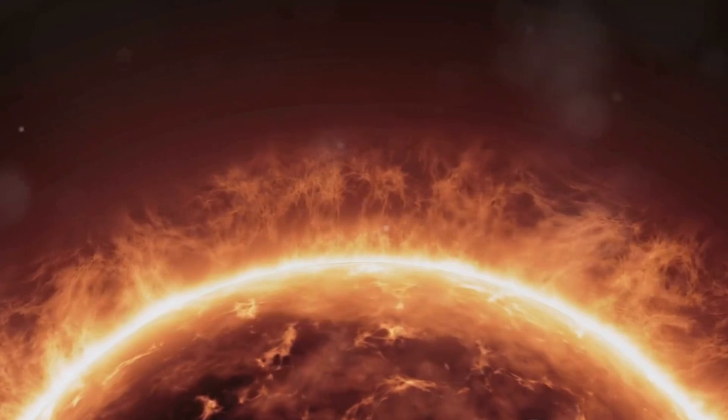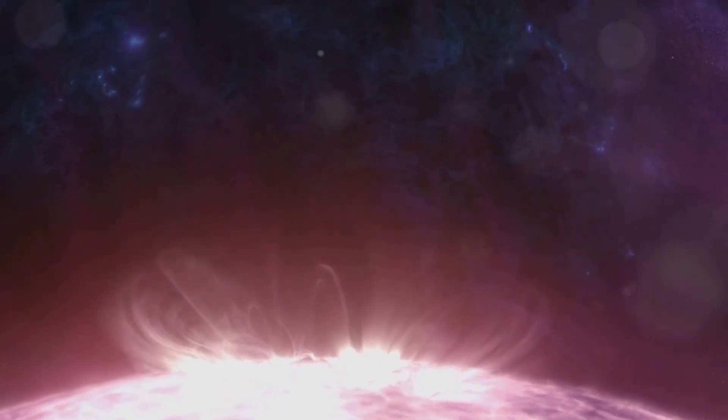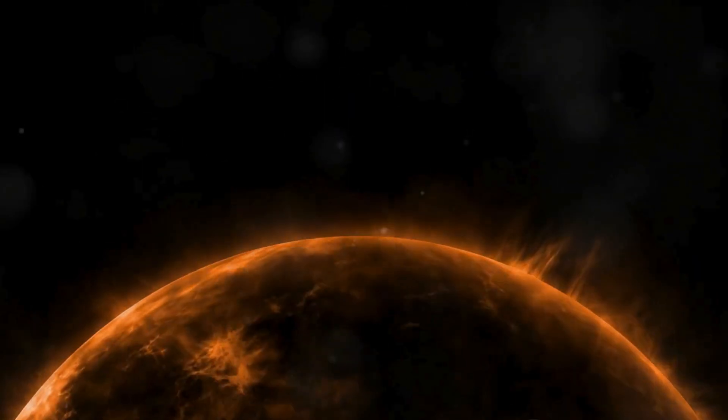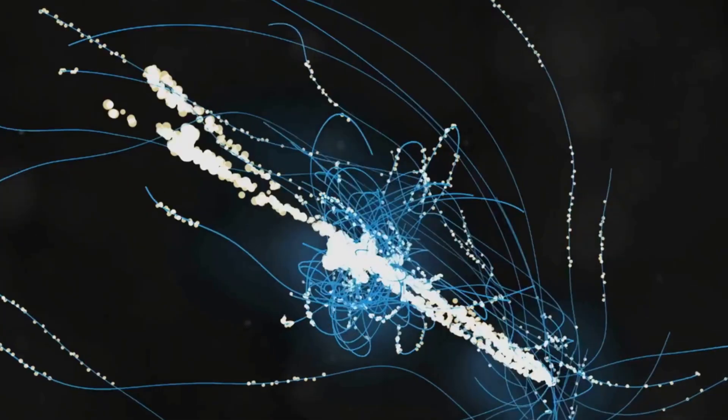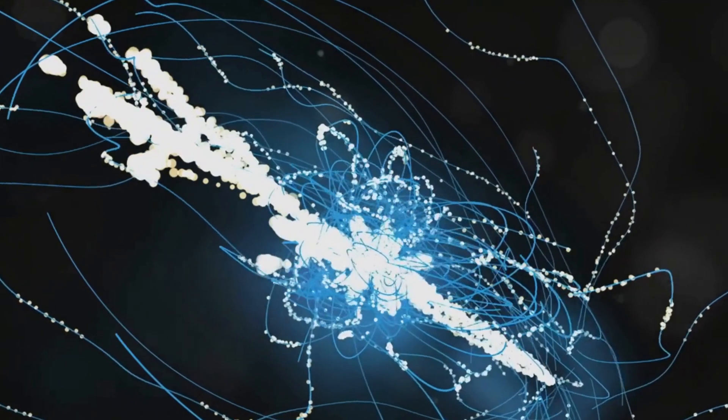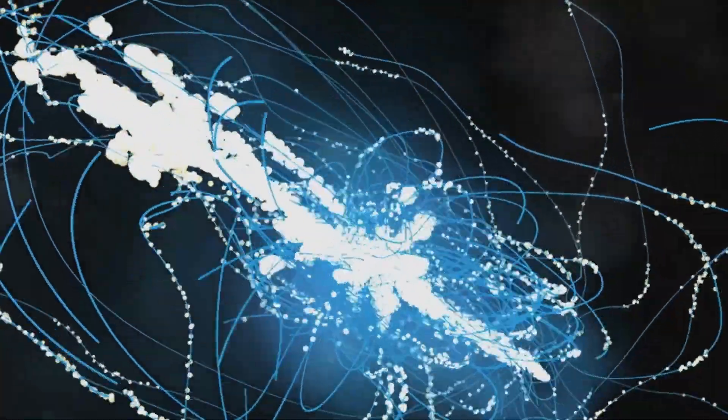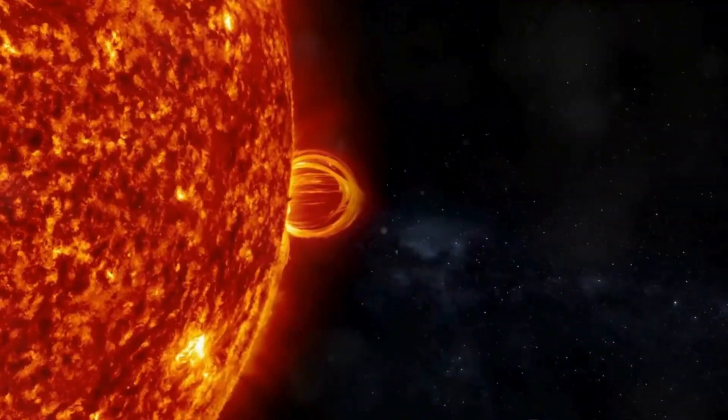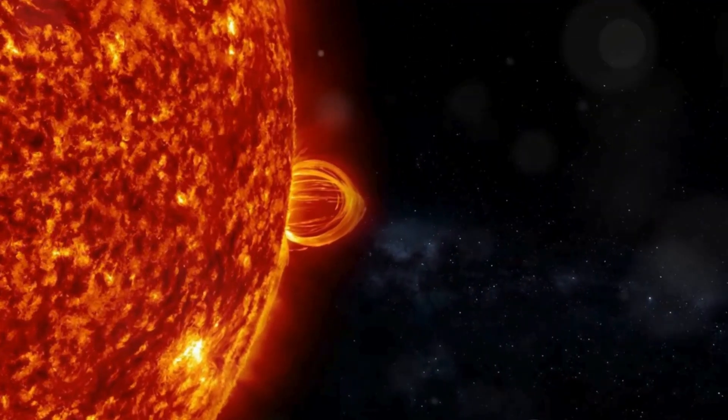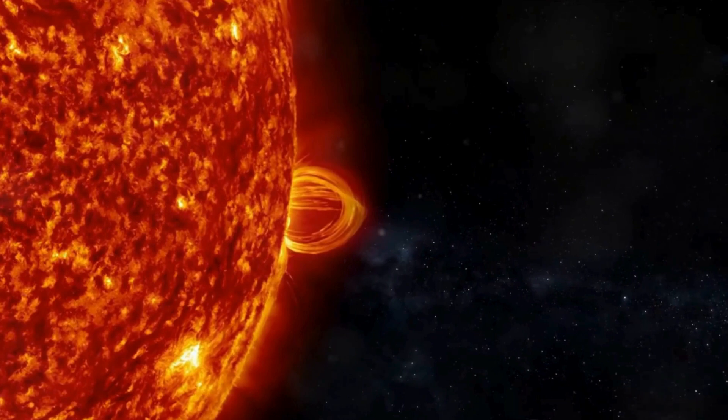But what exactly is a solar storm? It's essentially a massive expulsion of the Sun's energy. Imagine the Sun as an orange - when you squeeze it, juice squirts out. Similarly, the Sun, under the pressure of its own magnetic fields, releases high-energy particles in a burst of solar wind. This wind, when it's particularly strong, is what we call a solar storm.